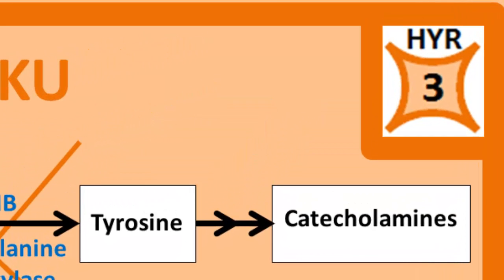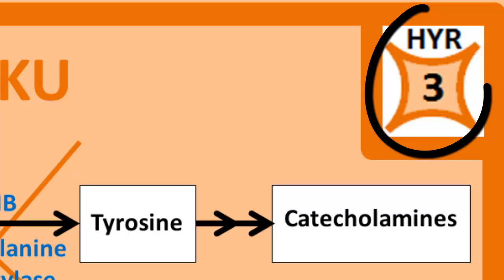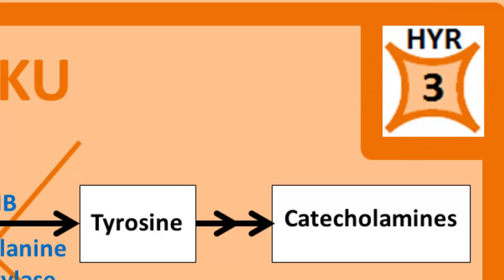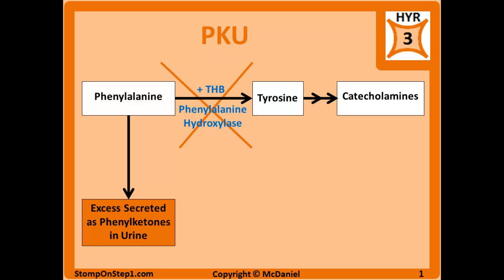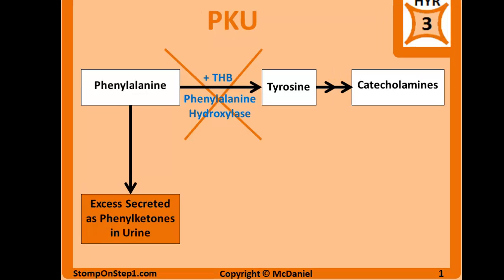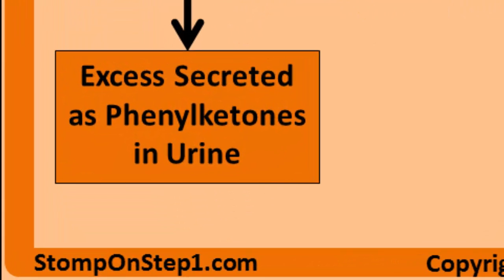You can see that I give phenylketonuria or PKU a high yield rating of three. For those of you who don't know what that is, it is a rating scale from zero to ten that gives you a rough estimate for how important each topic is to Step 1. If you're interested in learning more about the high yield rating you can go to my website.